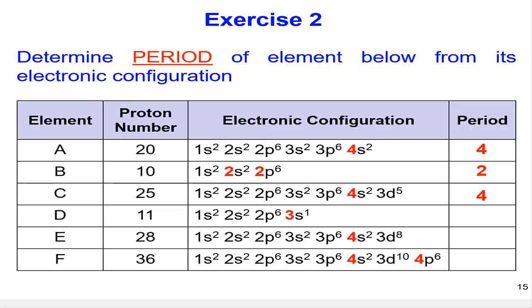Next, the electronic configuration of D is 1s² 2s² 2p⁶ 3s¹. The highest N value here is 3. So, D is in period 3.